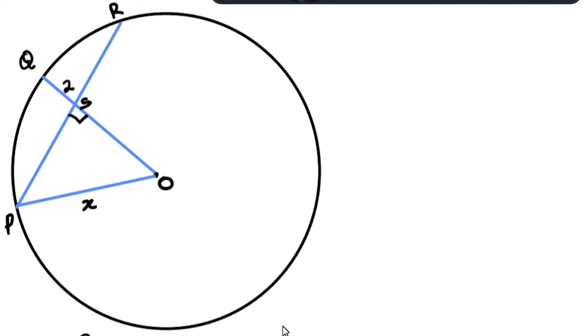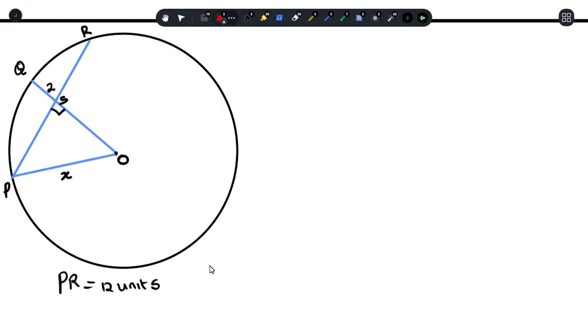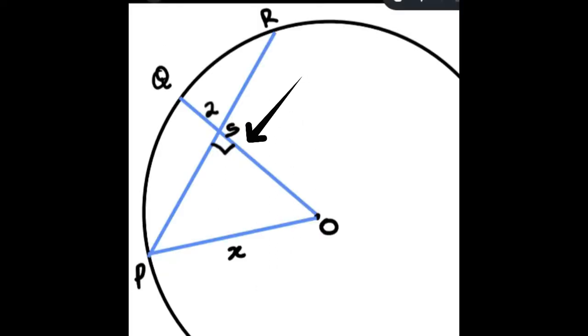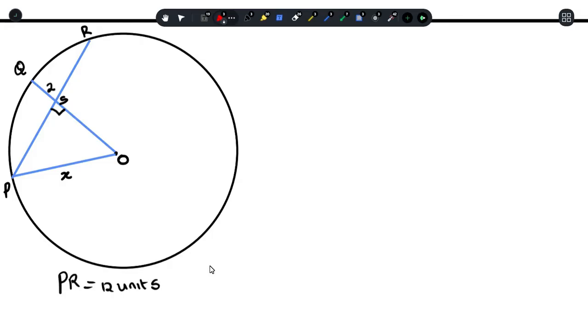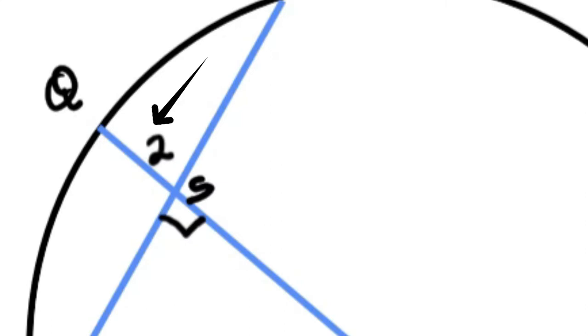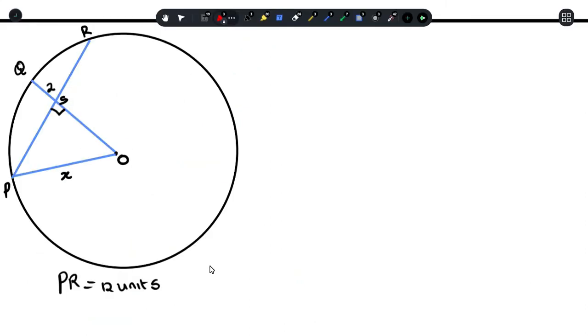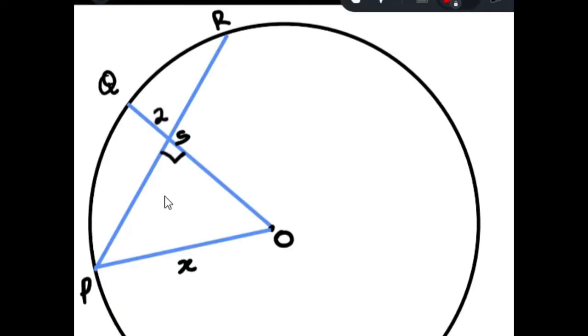So we have a circle. From this circle here, you can see that OQ is perpendicular to PR at S. We were given that QS is 2 units. And we were also given that PR is 12 units. The question was asking us to find what X is. Now from here, if we're using the theorems that we just did right now, we understand that PS would be 6 and SR would be 6.